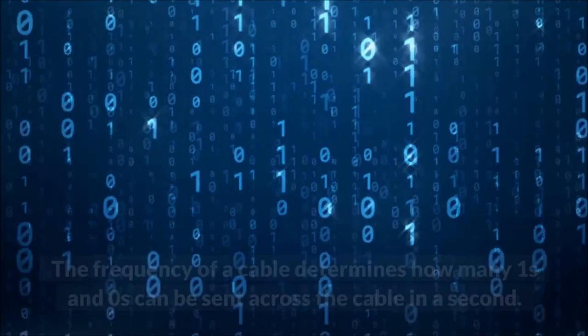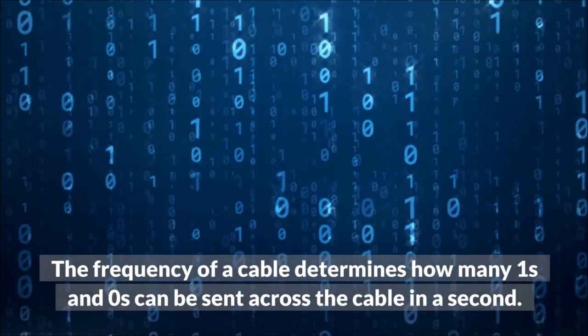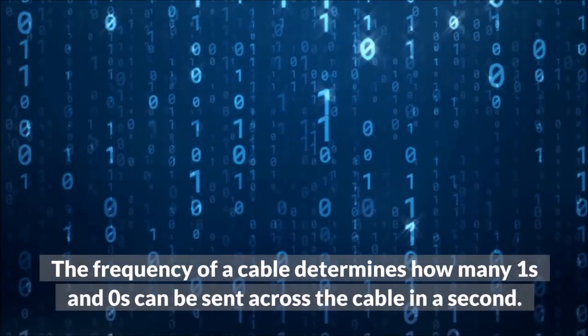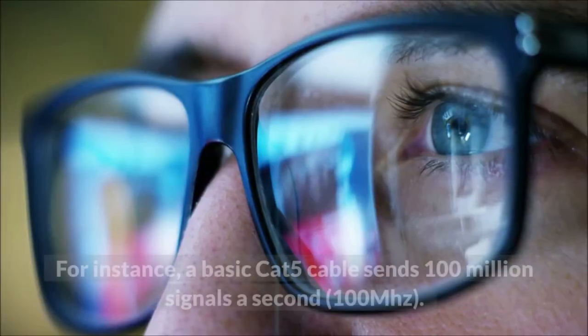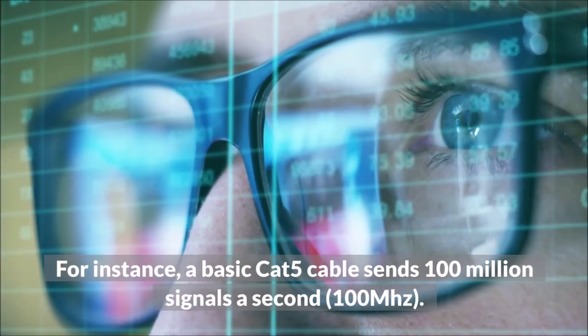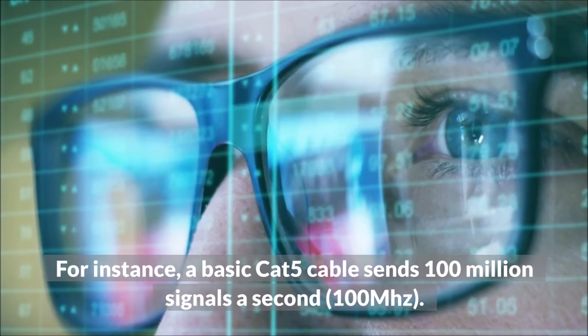Bandwidth explained. The frequency of a cable determines how many 1s and 0s can be sent across the cable in a second. For instance, a basic CAT-5 cable sends 100 million signals a second, 100 MHz.